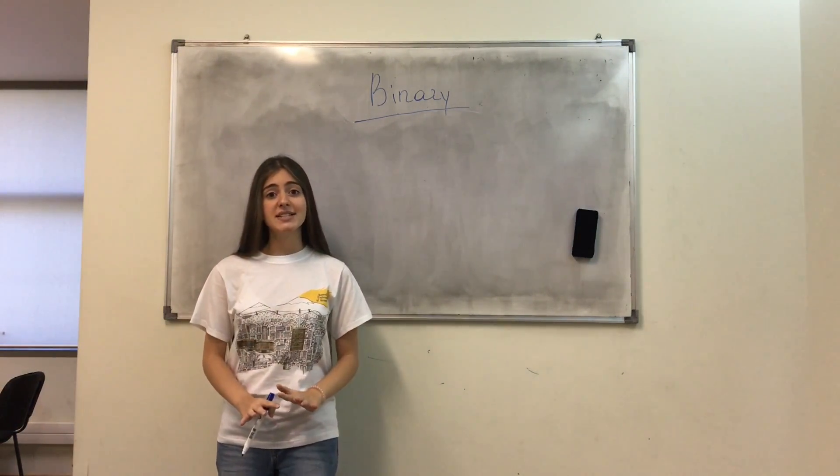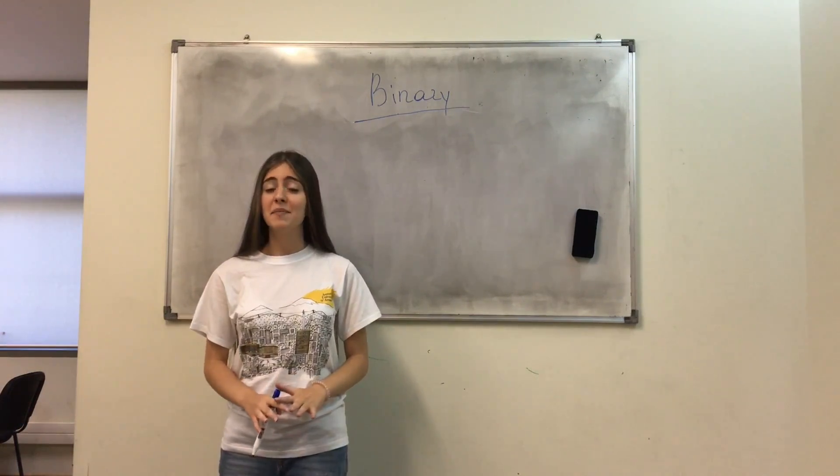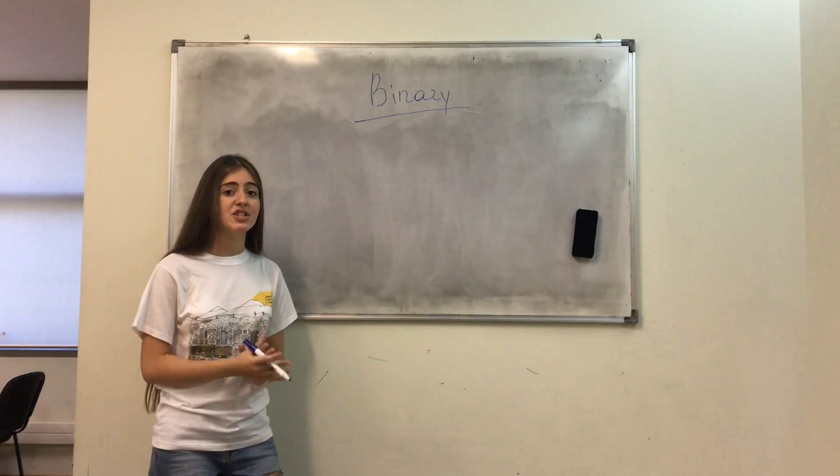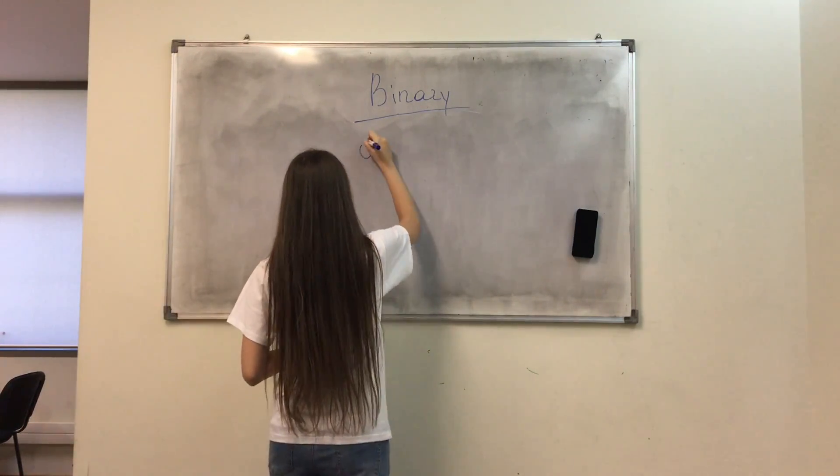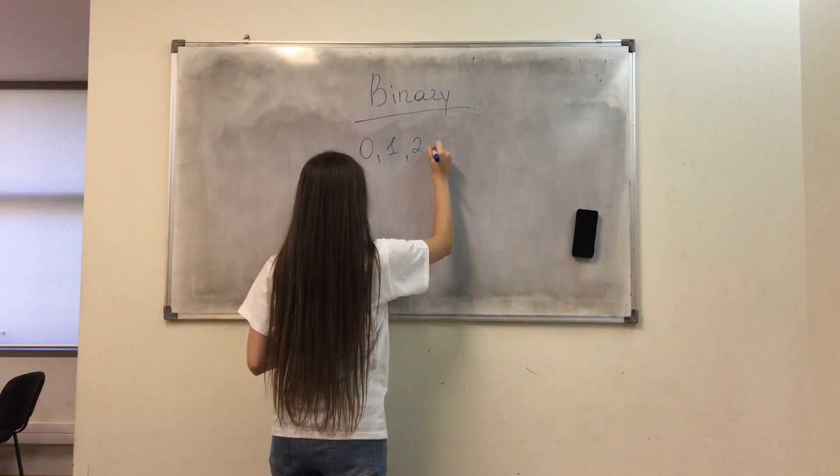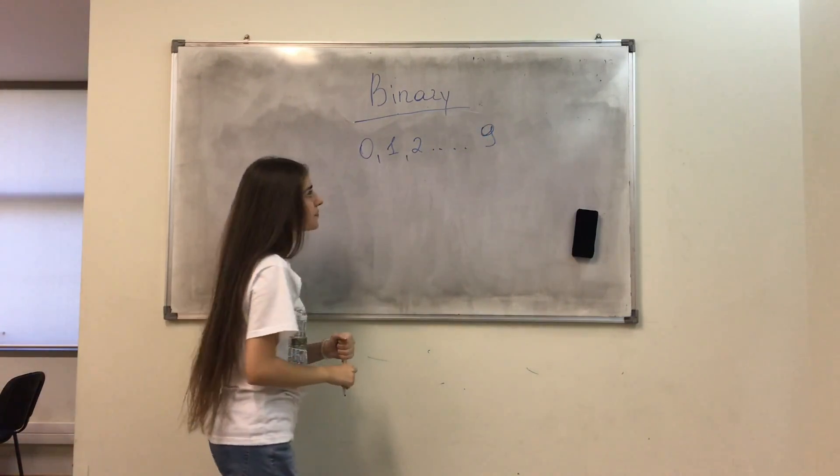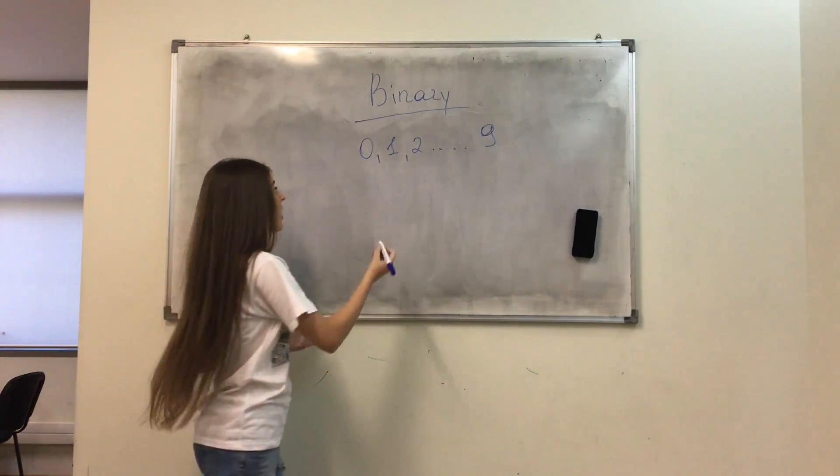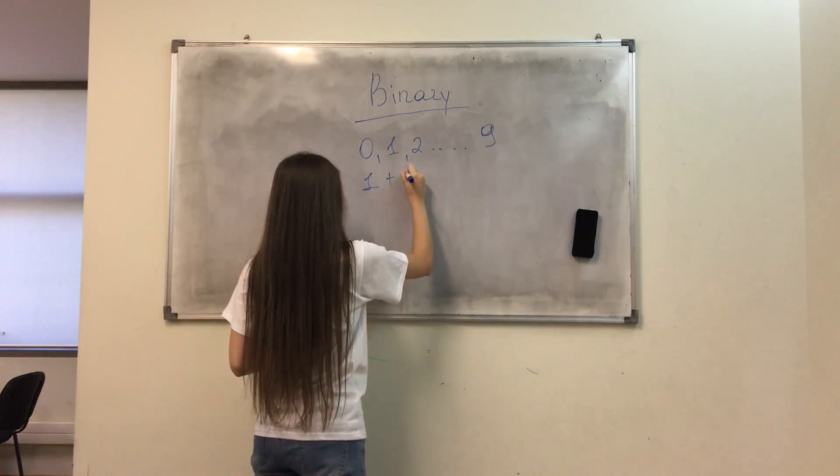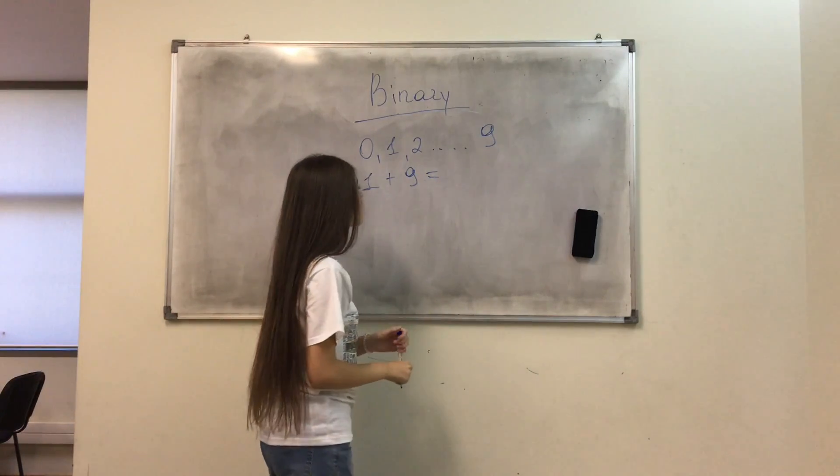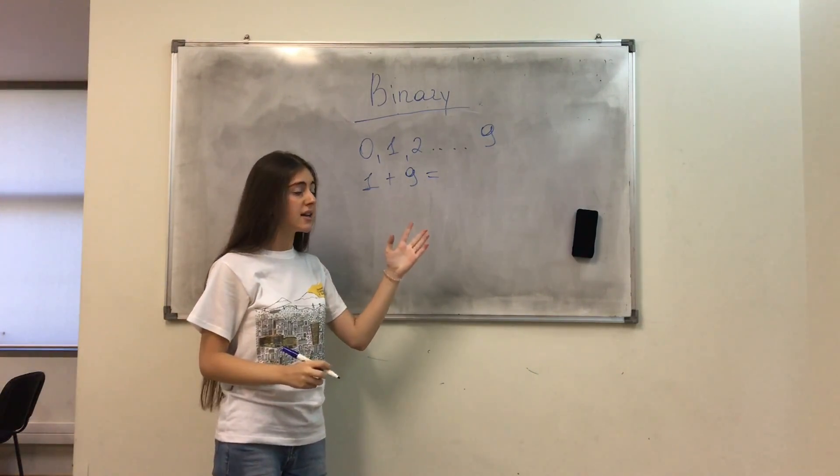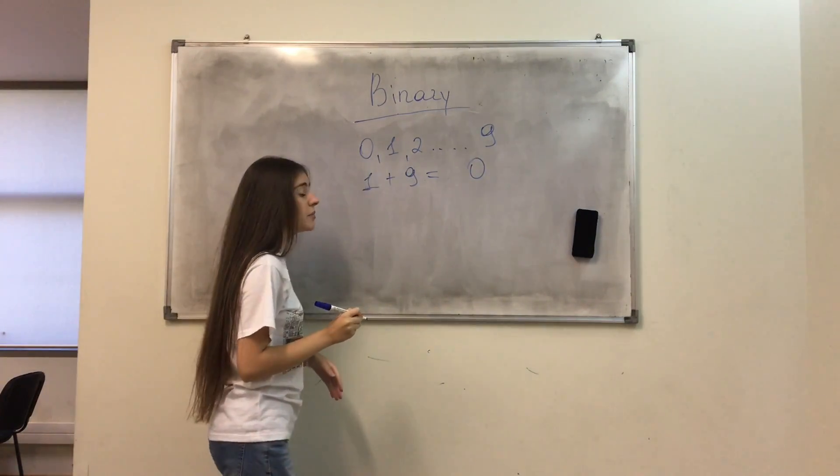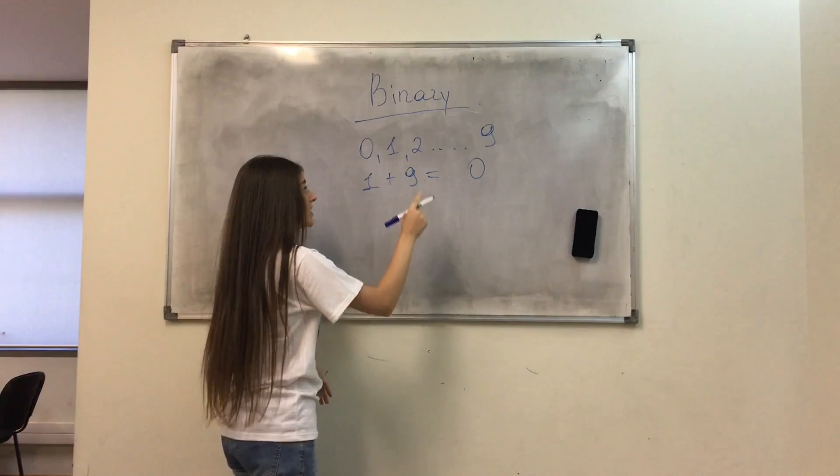But at first, let's look at decimal numbers that have a base of 10. So our decimal numbers have digits from 0 to 9. And if I want to get the number 10, I should add 1 to 9. But there are no more numbers to write, so I will get the first digit 0 and I will pass the 1 to the left position.